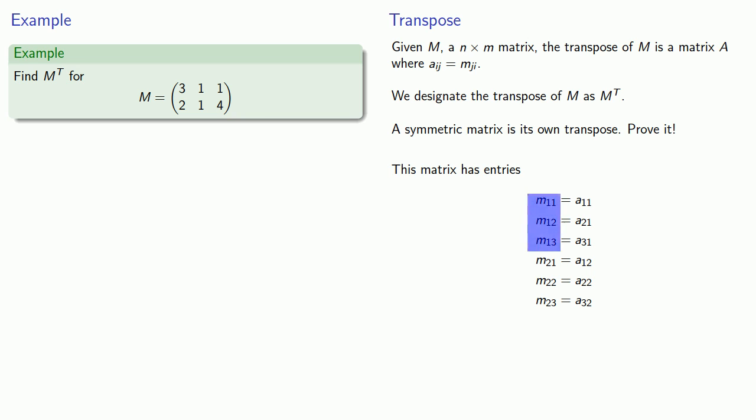So looking at our values, we see that M11, M12, and M13, those are the entries in the first row, will become A11, A21, A31, and those are going to be the entries in our first column.